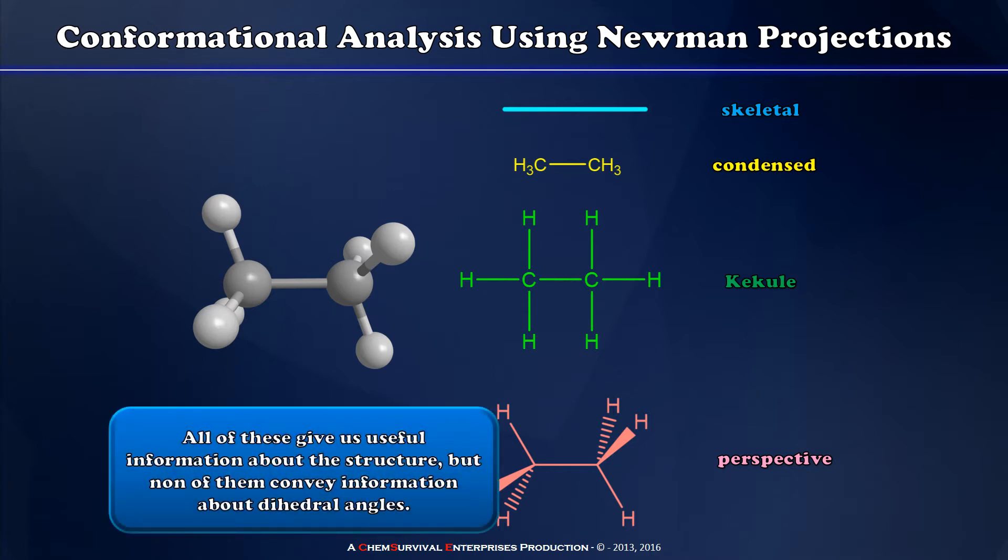In order to fix this problem, we've got to come up with a new way of drawing molecules which gives us really specific, very rigorous measurements of these so-called dihedral angles between the bonds on adjacent carbons. This is what Newman projections are for.